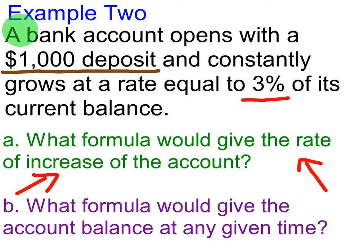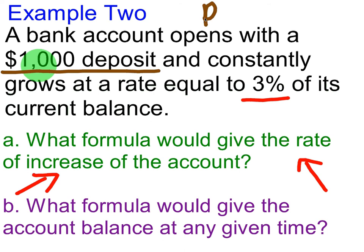We are now going to look at an exponential growth problem as it relates to money in a bank account. For example two, we have a bank account that opens with an $8,000 deposit. Right off the bat, you should be able to see that that represents the initial amount, as we've talked about before with exponential growth and decay. When talking about money, that initial amount we can call the principal.